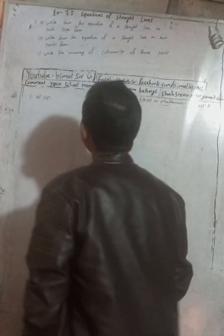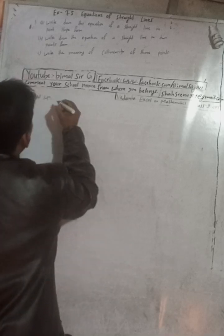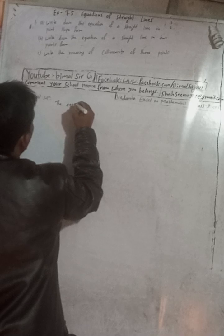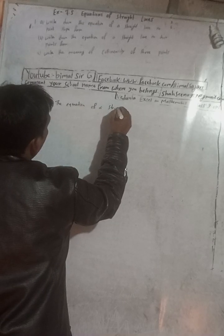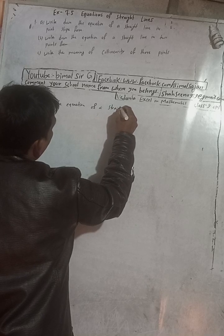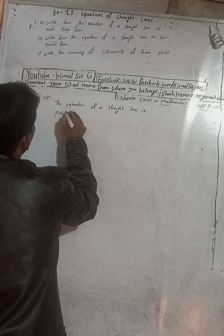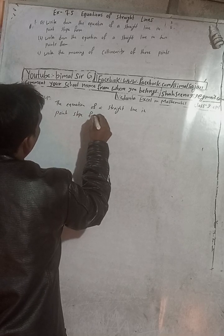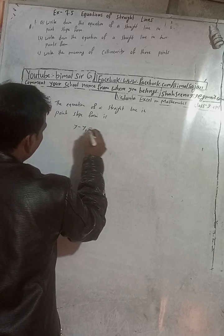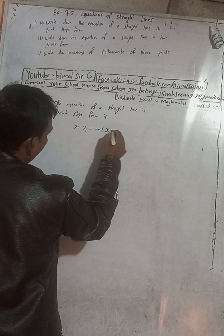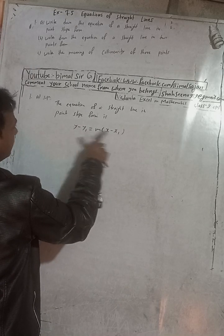The question is: write down the equation of a straight line in point-slope form. The equation of a straight line in point-slope form is: y minus y1 equals m times (x minus x1). Here, x1 and y1 is the given point, and m is the slope.